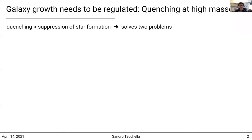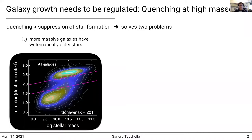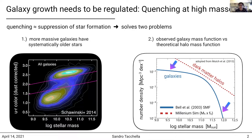In the past three decades, it has become clear that galaxy growth needs to be regulated. Specifically, star formation needs to be suppressed or quenched at high masses. This quenching solves two problems. First, quenching ensures the buildup of the quiescent sequence and that more massive galaxies host older stellar populations. Second, it can explain why the galaxy stellar mass function is different from the dark matter halo mass function, in particular at high masses.